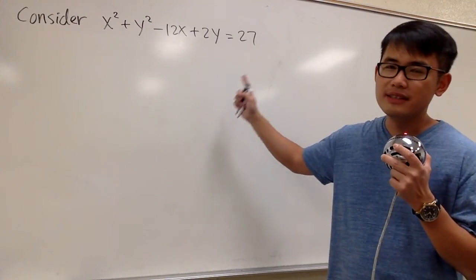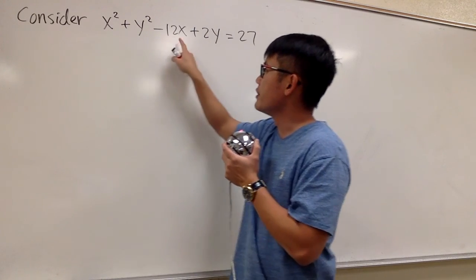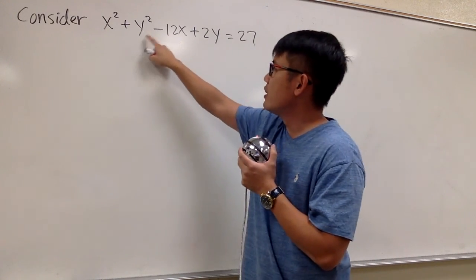This is an equation of a circle, however this is not in the standard form yet, because we see the x twice, here and here, and we also see the y twice, here and here.